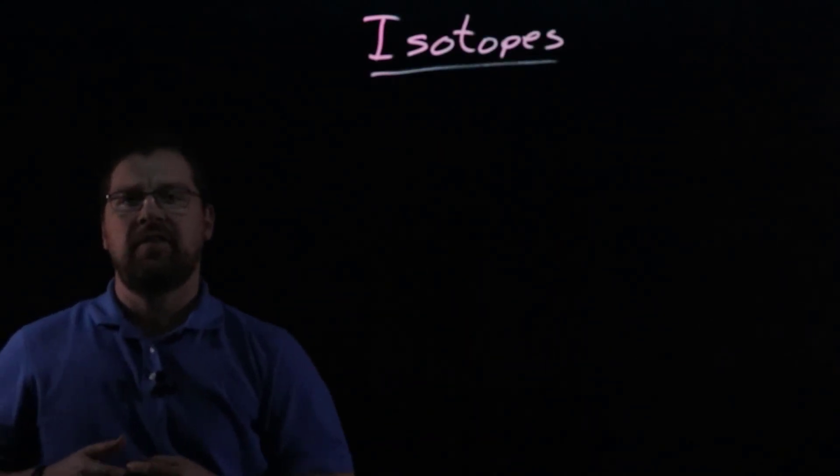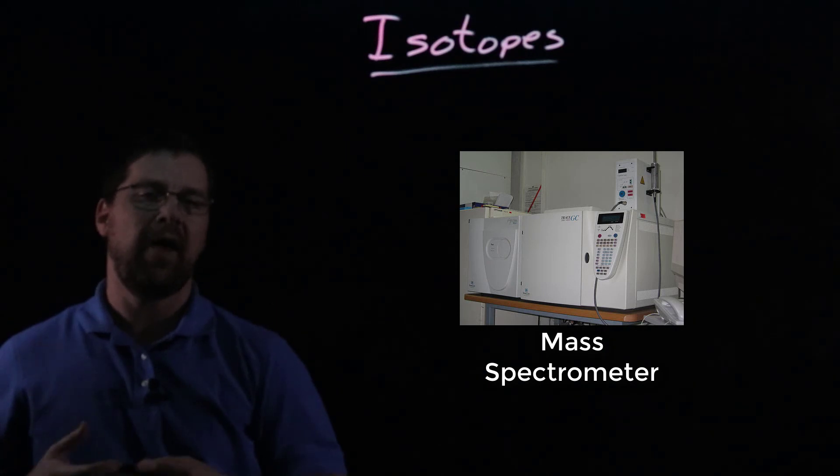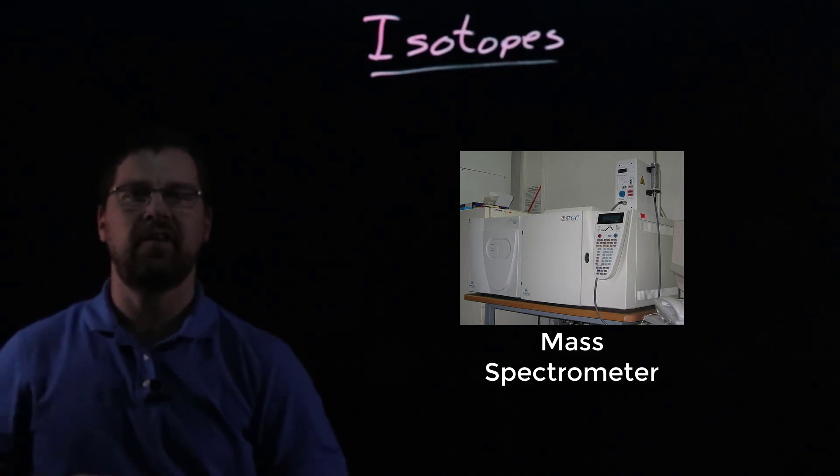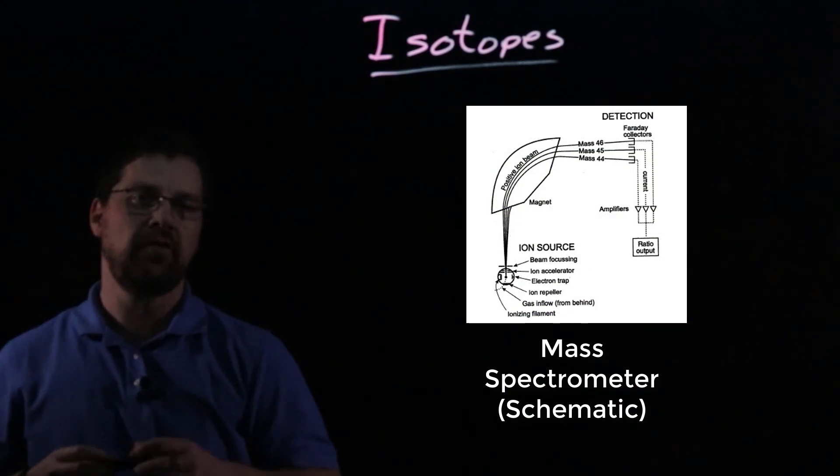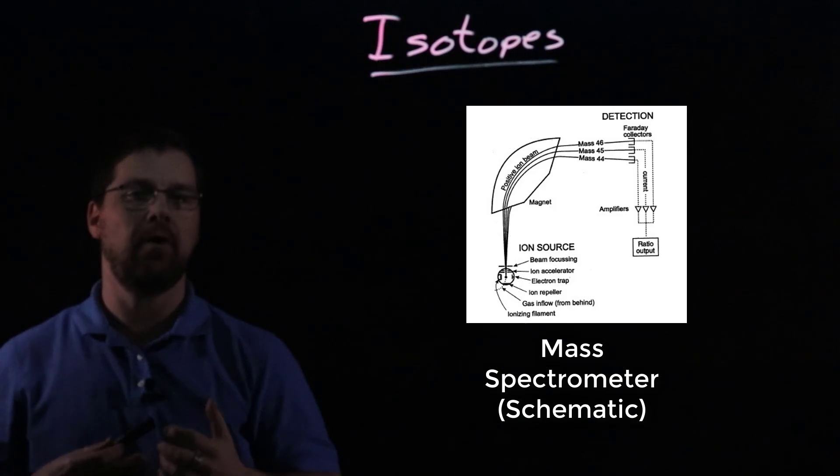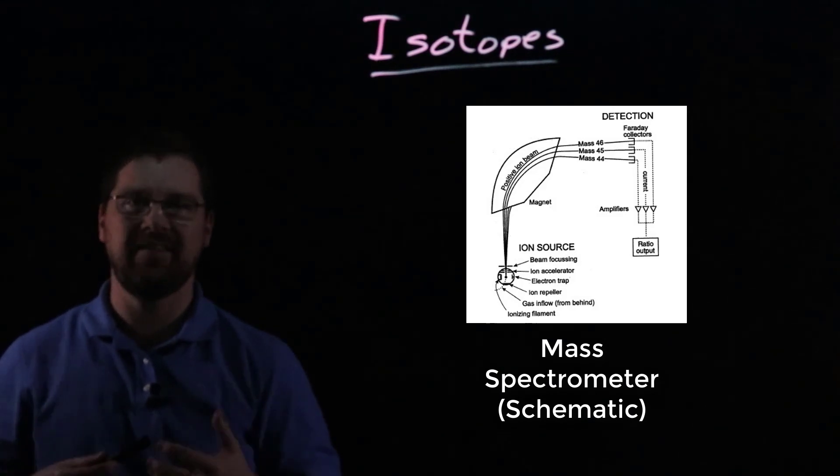Now, one of the ways that scientists study isotopes is by using an instrument called a mass spectrometer. And a mass spectrometer, what it does, in essence, is it ionizes an element's sample, so it makes it charged, and then it passes it through a magnetic field. And depending on the individual atoms, how heavy they are, or how much mass they have,